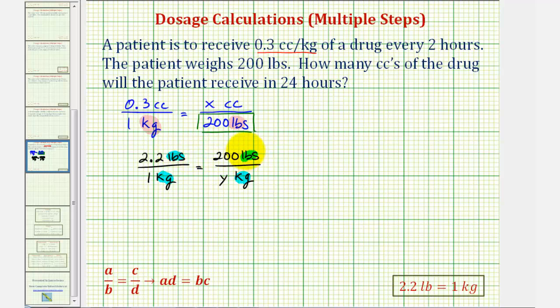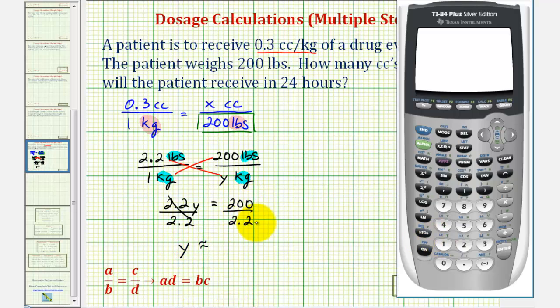When cross multiplying, to set up the equation, we'll leave off the units. So 2.2 times y is 2.2y must equal 1 times 200. Of course, that's 200. Divide both sides by 2.2. We have y is approximately, let's use our calculator, 200 divided by 2.2. We'll round this to two decimal places. We'll say this is approximately 90.91.